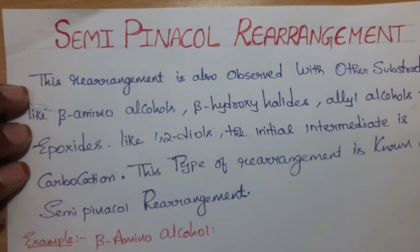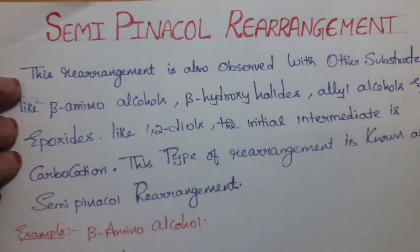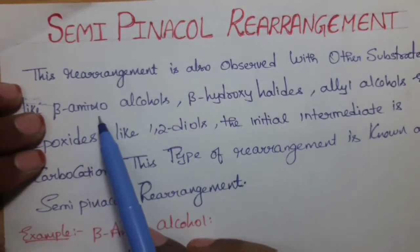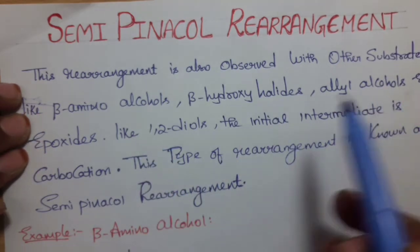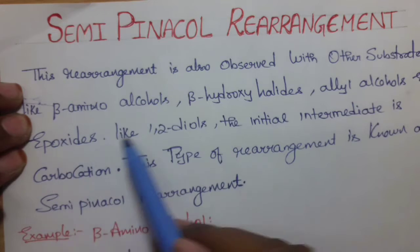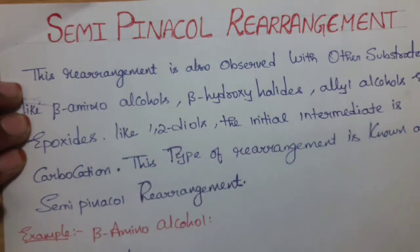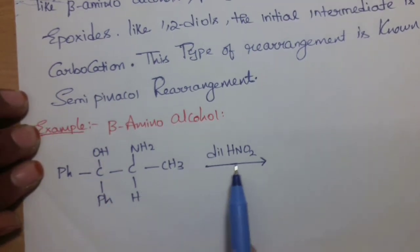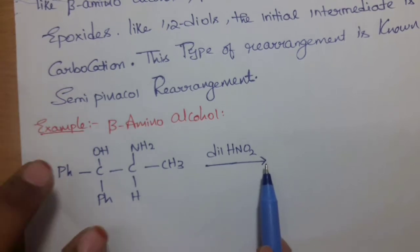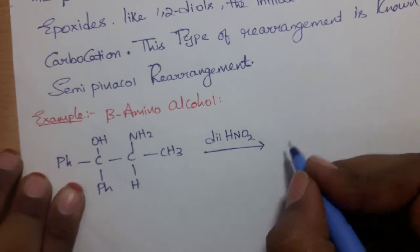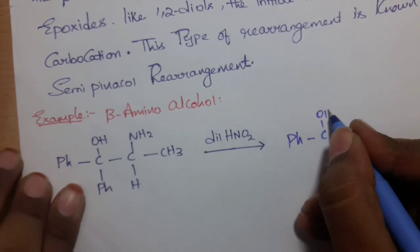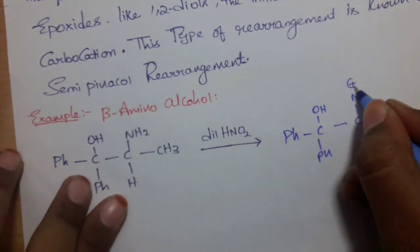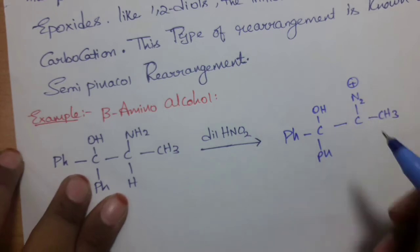This type of rearrangement is semi-pinacolone rearrangement. For example: beta amino alcohol, hydroxy halide, allyl alcohol, and epoxides. First, beta amino alcohol. We treat beta amino alcohol with dilute HNO2. The NH2 group undergoes nitrosation — the NH2 group is replaced by a nitroso group, giving NH2 with a positive charge, then N triple bond N formation.